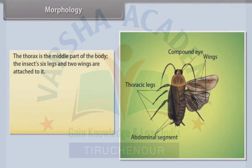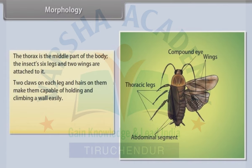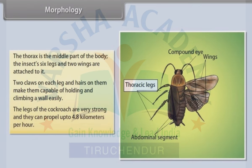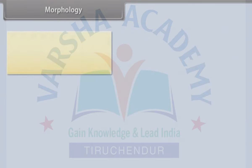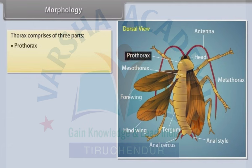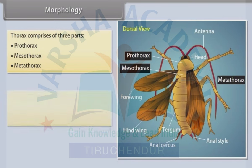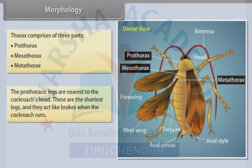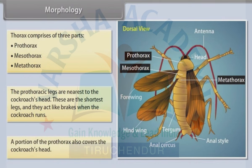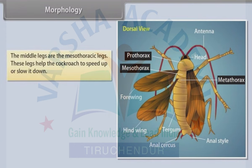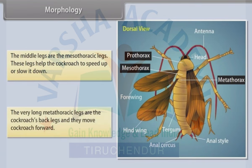Morphology - Thorax: The thorax is the middle part of the body, to which the insect's six legs and two wings are attached. Two claws on each leg and hairs on them make cockroaches capable of holding and climbing a wall easily. The legs can propel up to 4.8 km per hour. The thorax comprises three parts: prothorax, mesothorax and metathorax. Prothoracic legs are shortest and act like brakes; mesothoracic legs help speed up or slow down; and the very long metathoracic legs move the cockroach forward.